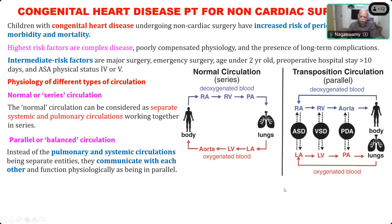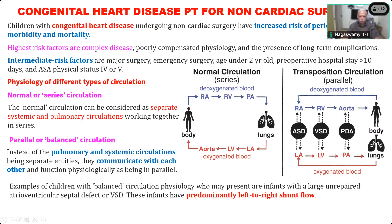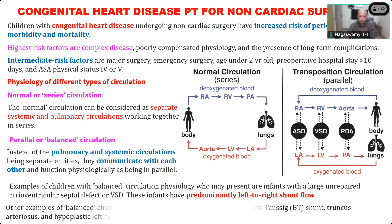Examples of children with balanced or parallel circulation include infants with large atrial septal and ventricular septal defects. These infants are predominantly left-to-right shunts, so initially they will not have cyanosis because only deoxygenated blood is mixing with deoxygenated blood in larger volume. Other examples are children with a modified Blalock-Taussig shunt done as a temporary palliative measure for increasing pulmonary blood flow, truncus arteriosus, and hypoplastic left heart syndrome.